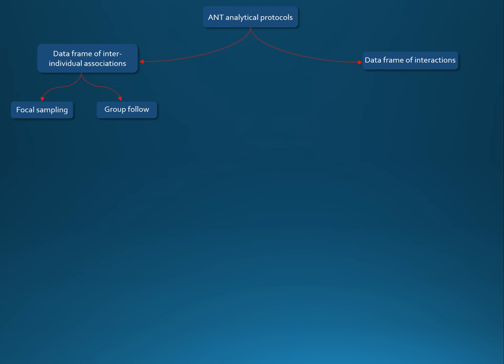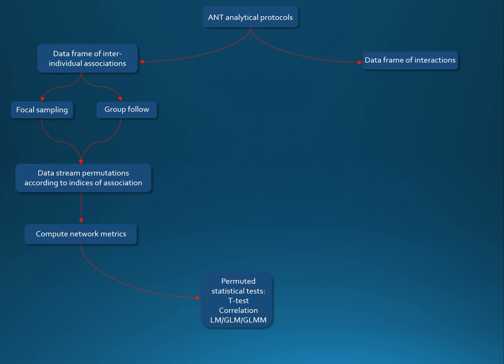Once you have input your data, you can then realize data stream permutation according to several indices of associations. Then you can compute network metrics on those permuted data to finally run permuted statistical tests.